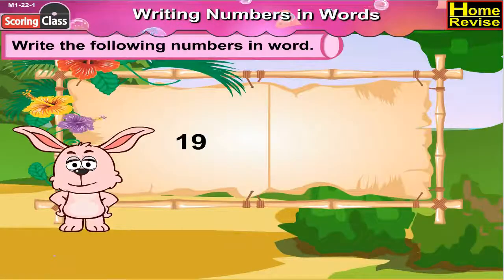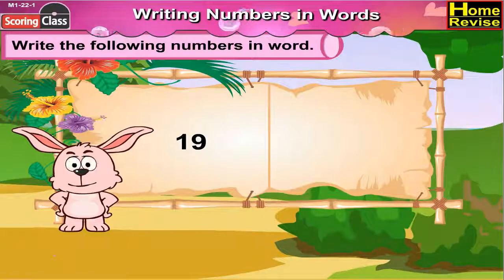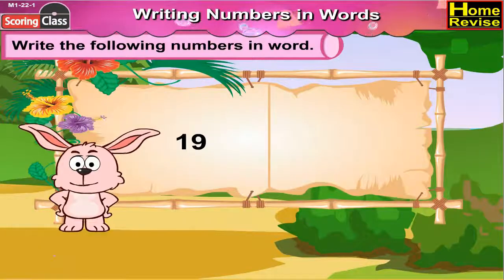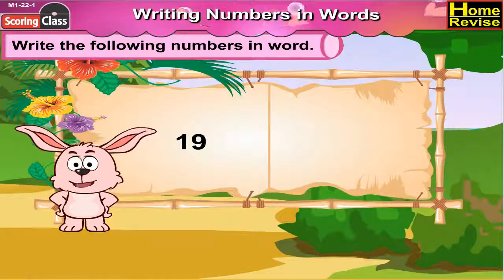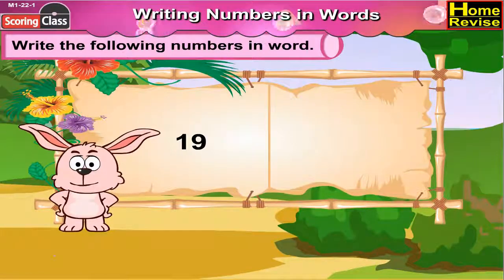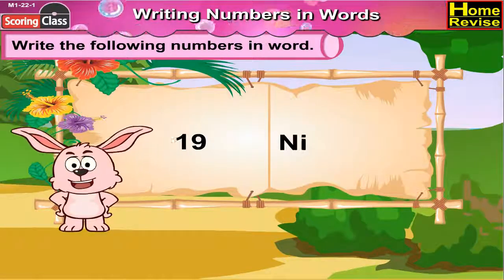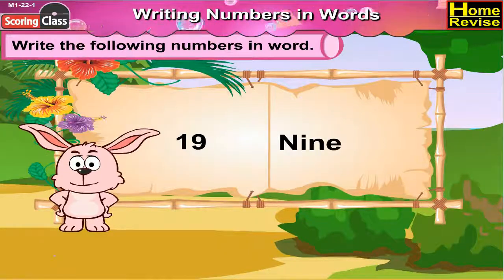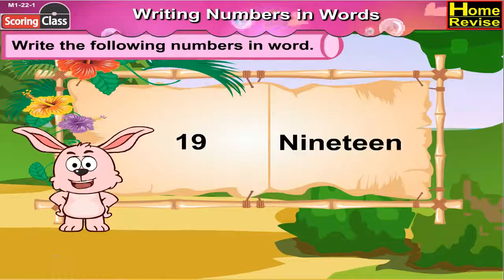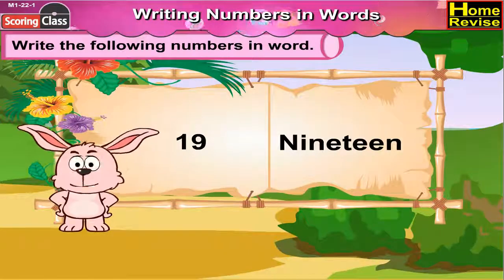Write the following numbers in words. 19 — we can write 19 as N, I, N, E, T, E, E, N.